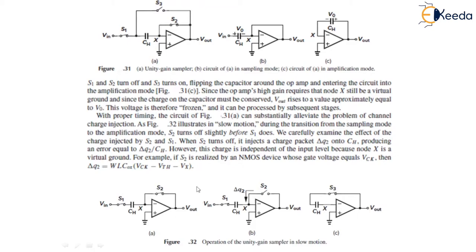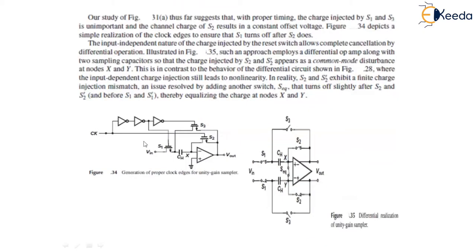Now, our study of figure 31A thus far suggests that with proper timing, the charge injected by S1 and S3 is unimportant and channel charge of S2 results in a constant offset voltage. Figure 34 depicts a simple realization of the clock edges to ensure that S1 turns off after S2 does. As shown over here, we have used this inverter and we are connected to both this S1 and S3 for simultaneously off of this S1 and S2.